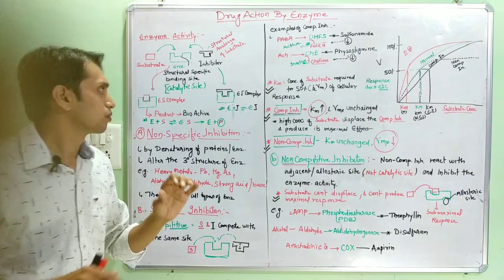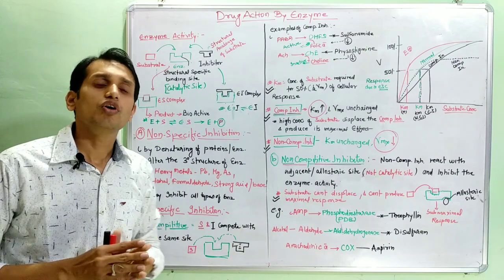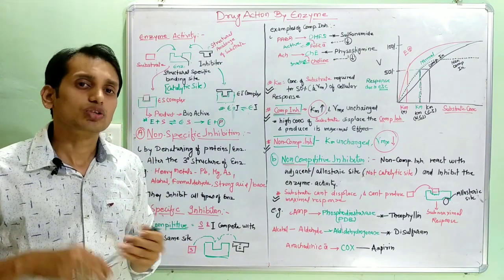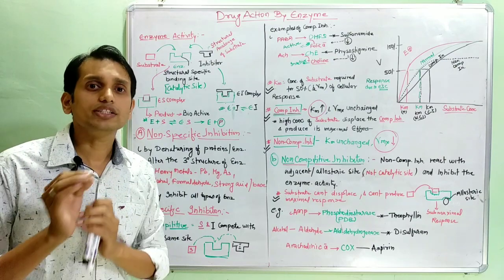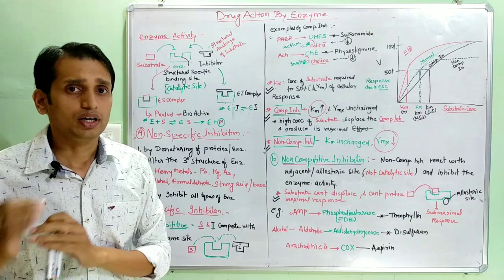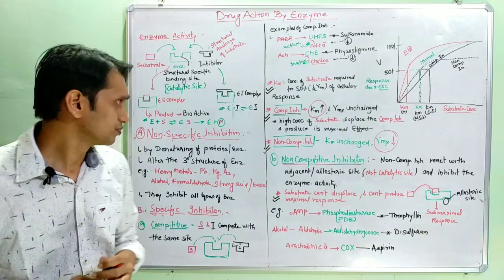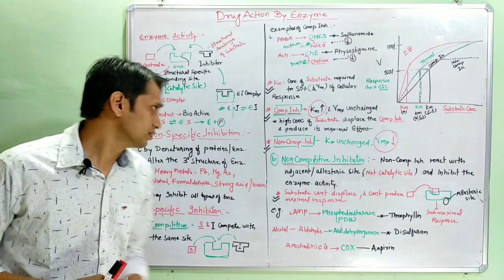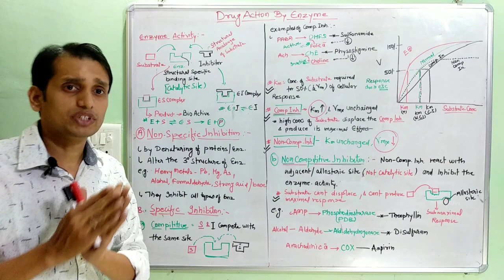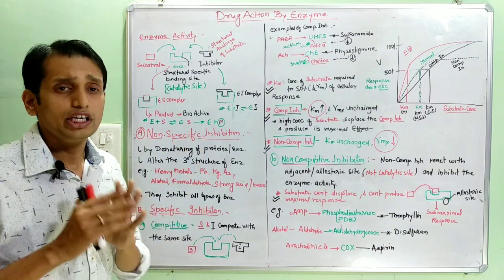But sometimes, what happens when the inhibitor is a false substrate? If it acts as a false substrate, then it can produce a bio-inactive molecule in our body. Now, coming to the various types of enzyme inhibitions: first is non-specific inhibition and second is specific inhibition.